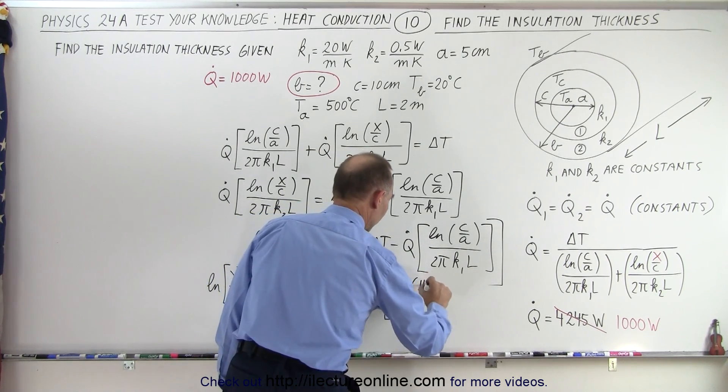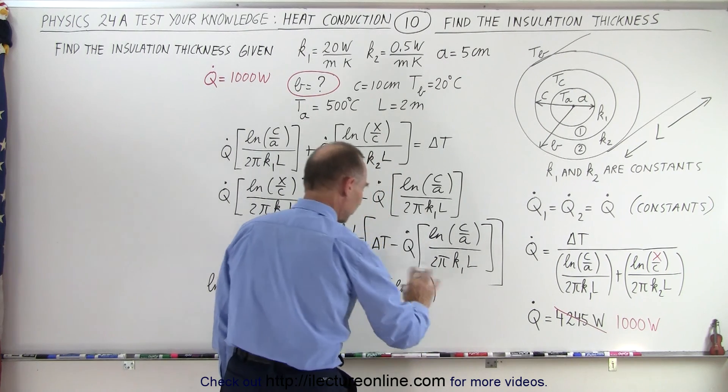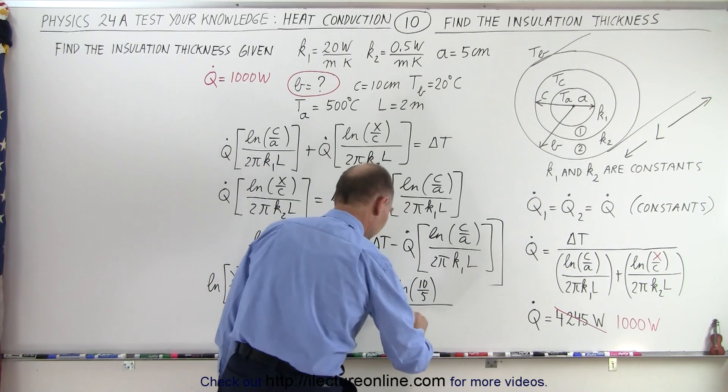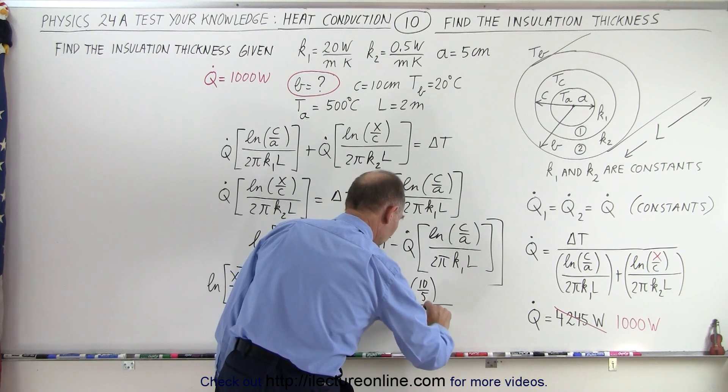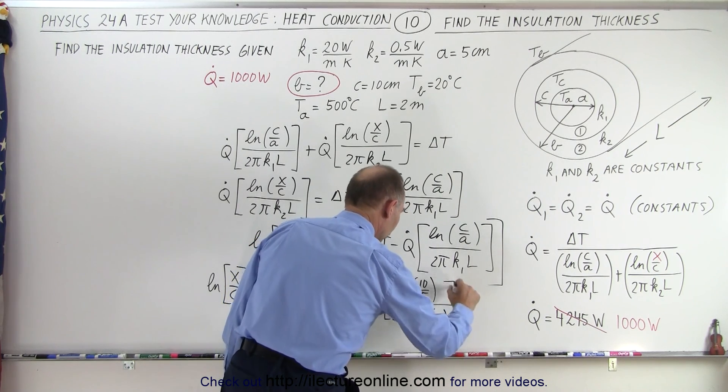So the natural log of c, which is 10 over a, which is 5, and centimeters is fine because the units cancel. 2 pi times k1, which is 20, times the length, which is 2.